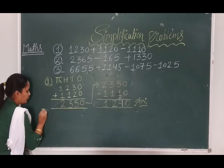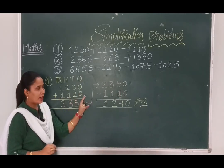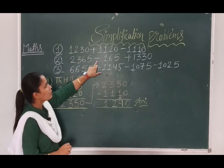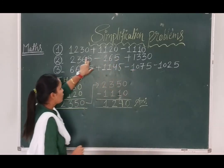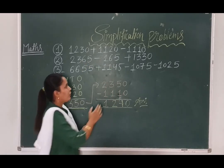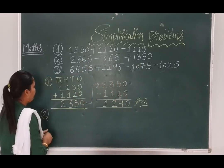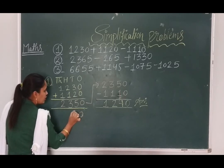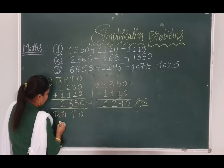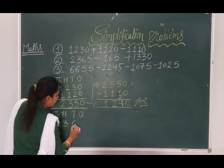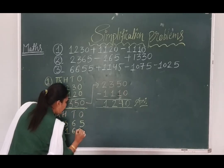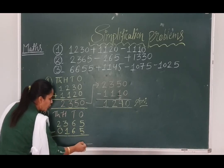Now, question number 2. This way we write a simplification question and solve it. In question number 2, we observe the subtraction sign first, then the addition sign. So first we subtract these two numbers, then whatever answer comes, we add the third digit. We write the same place values: ones, tens, hundreds, thousands. Our digit is 2365 minus 165 — for the thousands place we put 0.